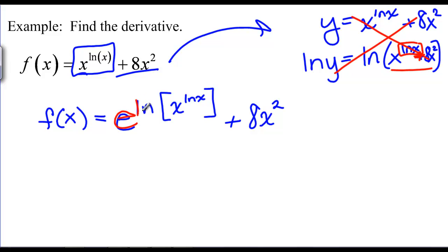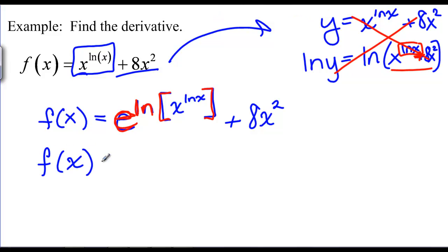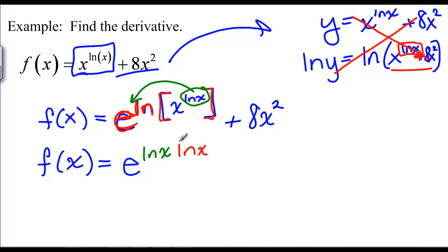Back to the e-to-the-ln approach: e and ln undo each other, so we haven't changed the function. Now we use the log rule to bring the exponent out front: x to the ln of x is the same as e to the ln of x times ln of x. Rewriting, we get e to the quantity ln of x times ln of x, which is ln of x squared, plus 8x squared. This looks confusing but is now ready for standard derivative rules — no implicit differentiation needed.